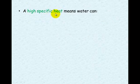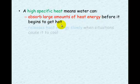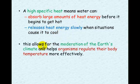A high specific heat is really important to water because it means it can absorb large amounts of heat energy before it begins to get hot. It releases heat energy slowly when situations cause it to cool. This allows for the moderation of the Earth's climate, which is absolutely vital. It also helps organisms regulate their body temperature more effectively.